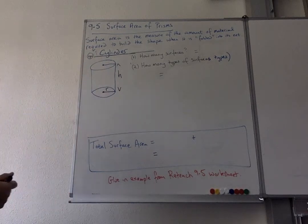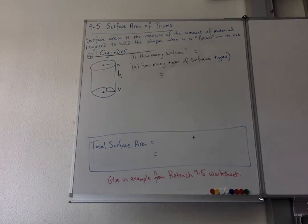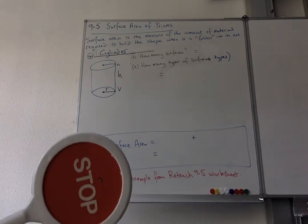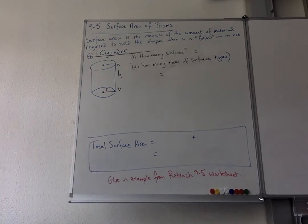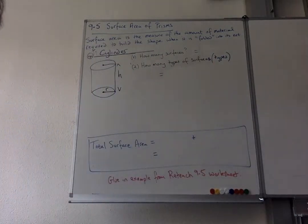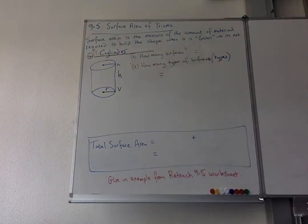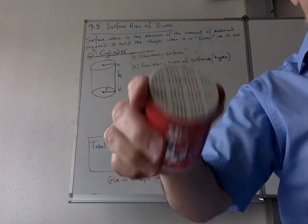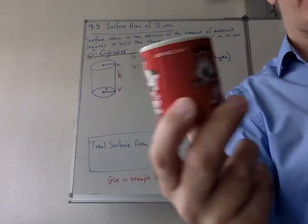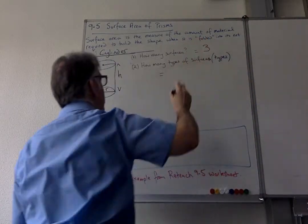Hello, welcome back again to surface area of some prisms. Last one, number four: the cylinder. Same thing - stop the video, decide how many surfaces and how many types of surfaces we have. You're ready? Press go. How many surfaces? Three. There are three surfaces on a cylinder: one, two, and the curvy bit. That's what the cow says, three.